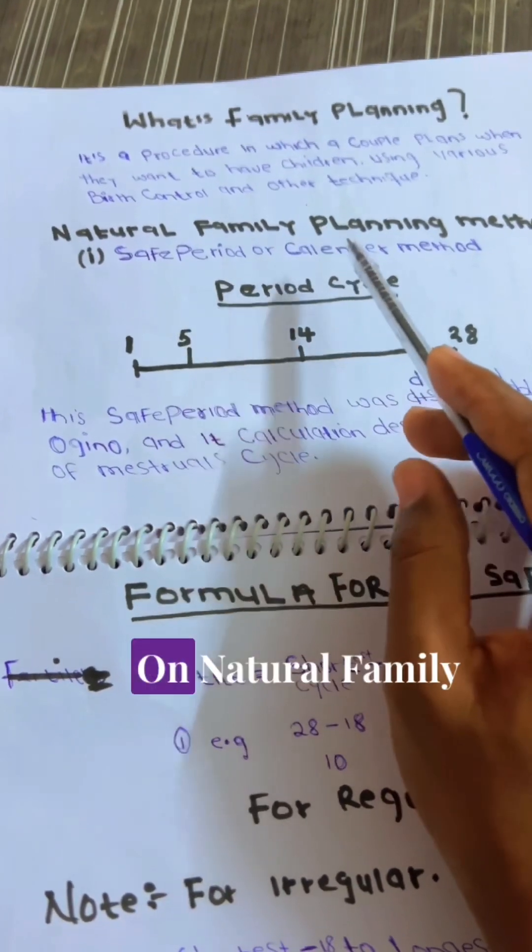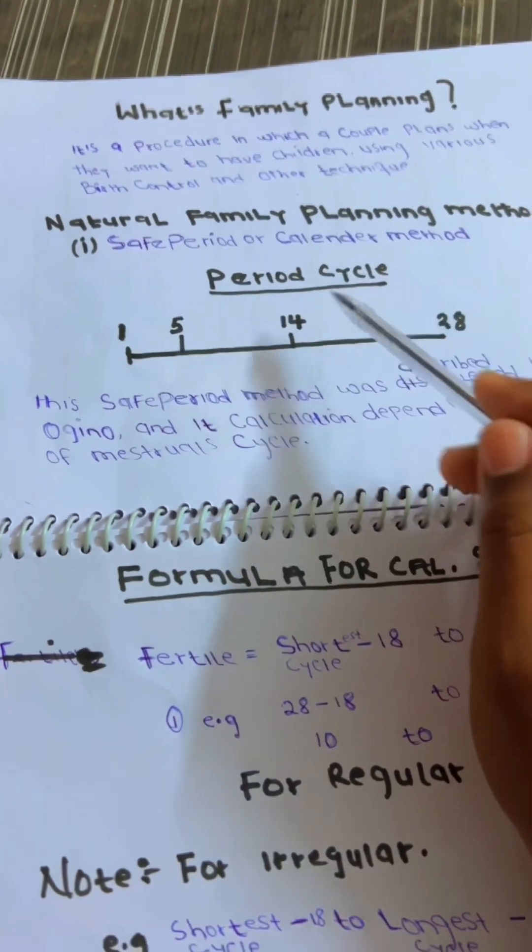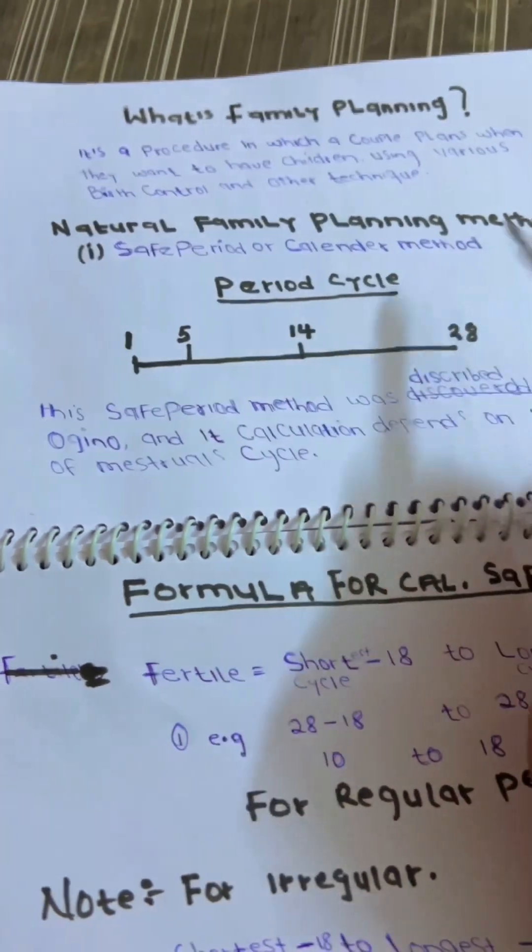Today, we are going to focus only on the natural family planning method. One of its examples is the safe period or calendar method.